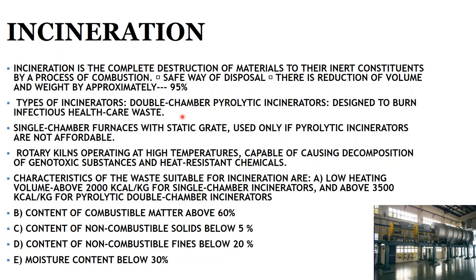The third type of incinerator is the rotary kiln, which operates at high temperature capable of causing decomposition of genotoxic substances and heat-resistant chemicals. A rotary kiln comprises a rotating oven and a post-combustion chamber. The axis of the kiln is inclined at a slight angle of around three to five degrees. The kiln rotates two to five times per minute, is charged with waste at the top, and ashes are evacuated at the bottom. Gases produced in the kiln are heated to high temperature to burn off gaseous organic compounds.